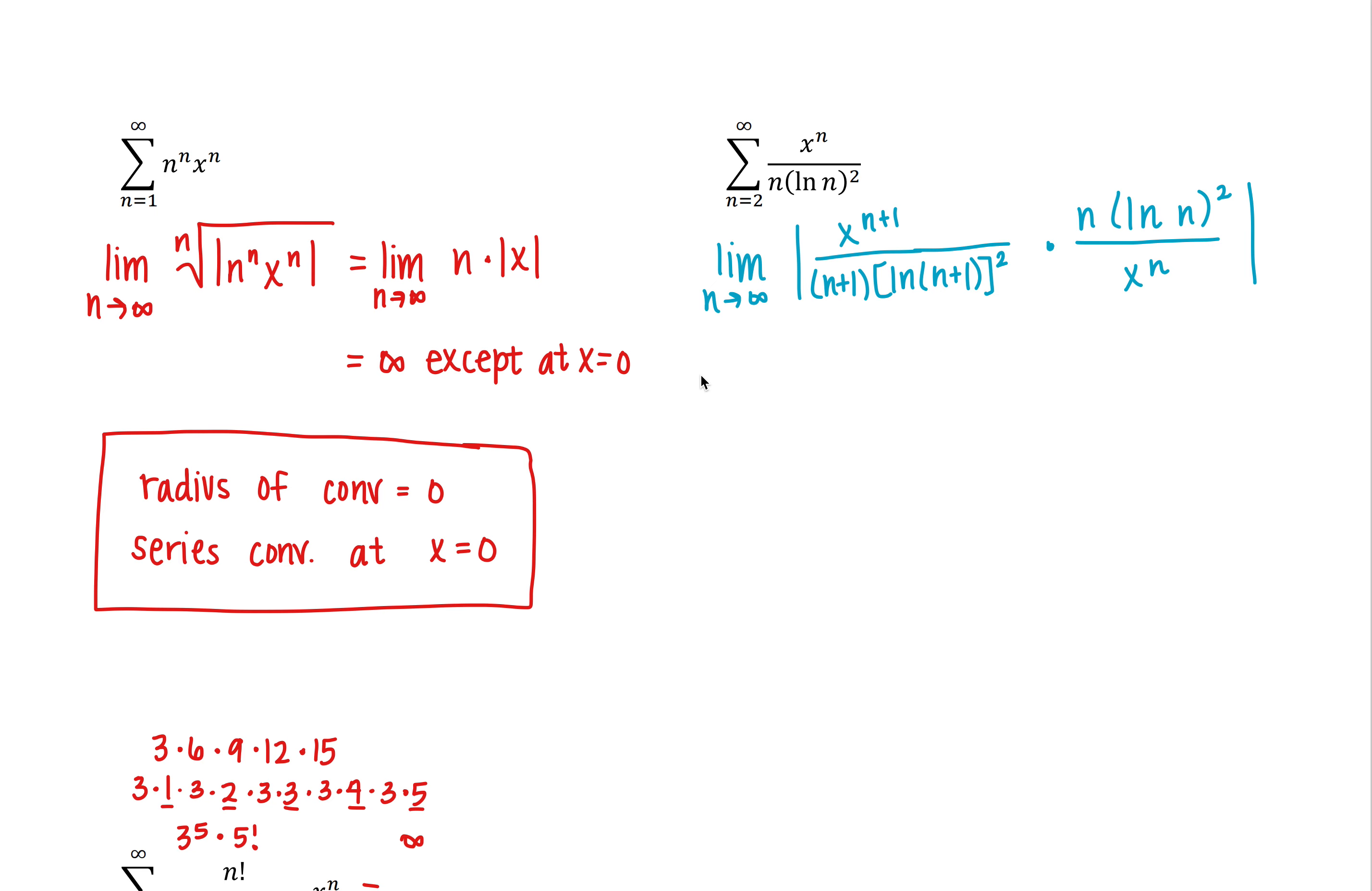Now what I'm going to do here is kind of separate things out a little bit just to make it a little easier to find our limits. x to the n plus 1 divided by x to the n just leaves us with an x.